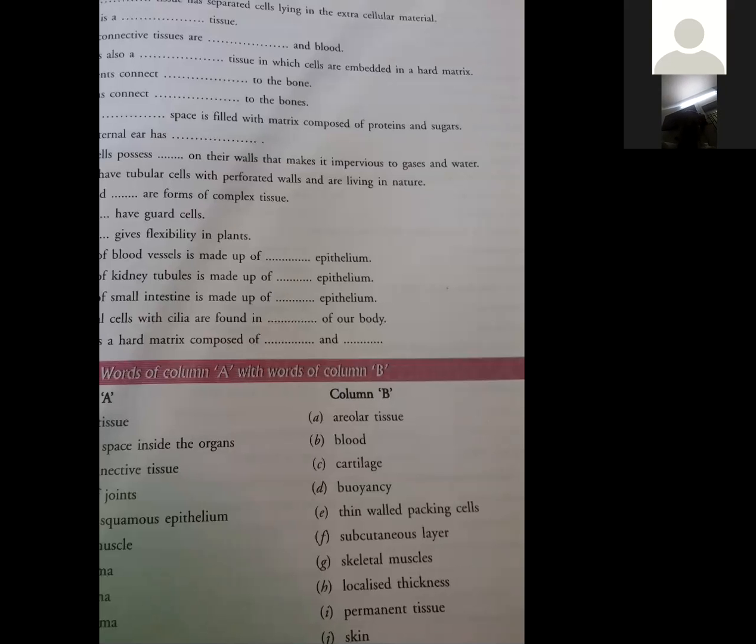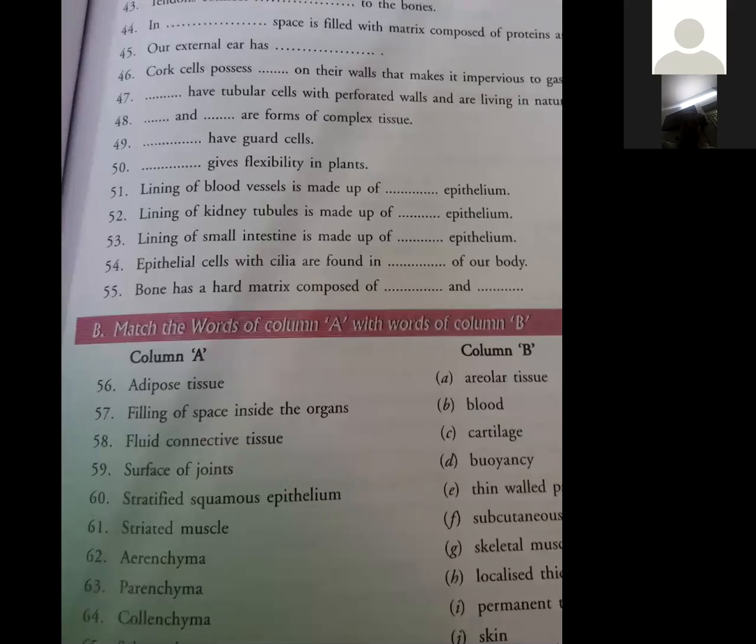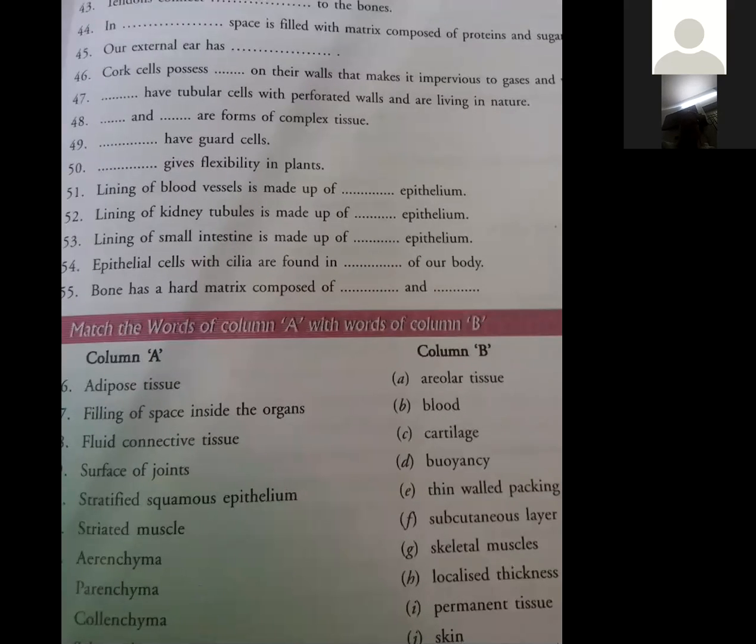Next one comes filling of space inside the organs. Space is filled, so there is air. Which tissue? An air-related tissue. First one, aerenchyma. If we have studied each tissue, the keywords are in our mind. And if we have those keywords, matching will be no problem.